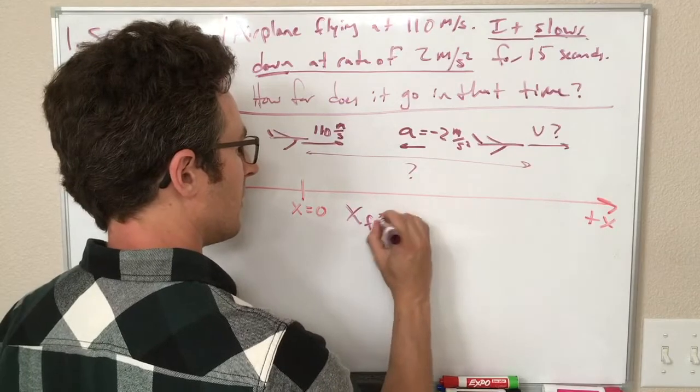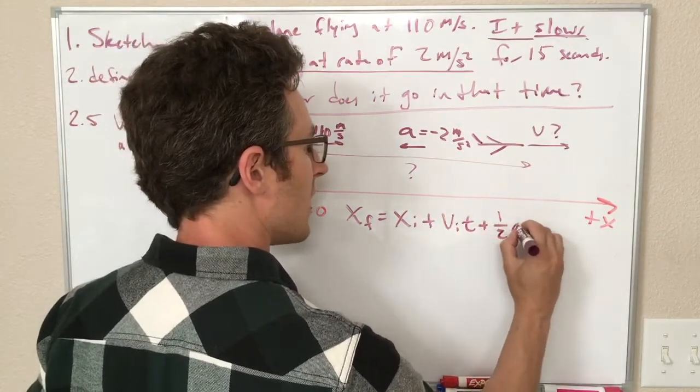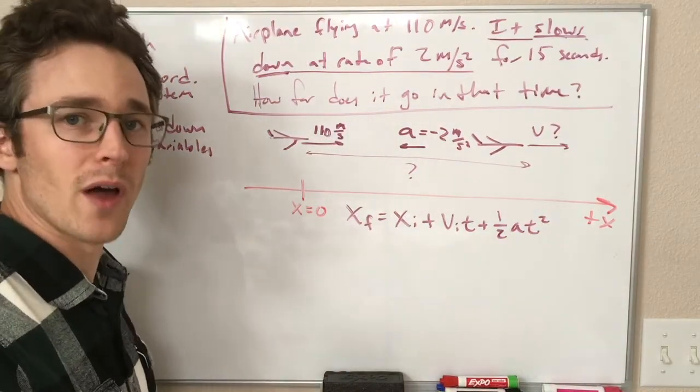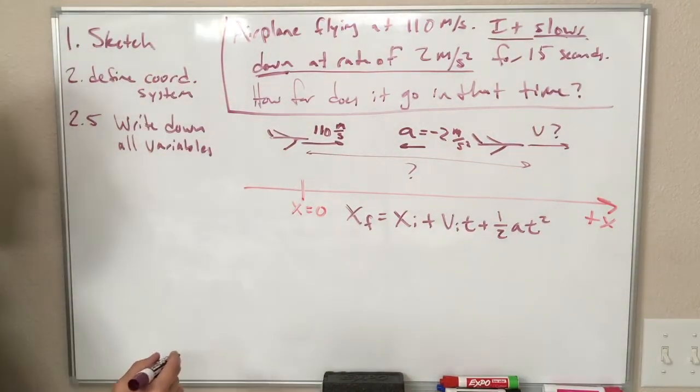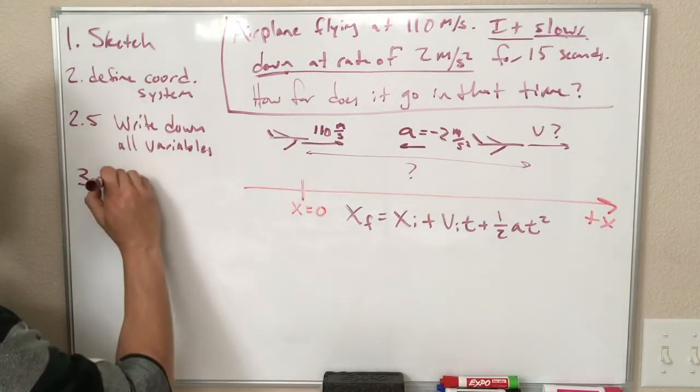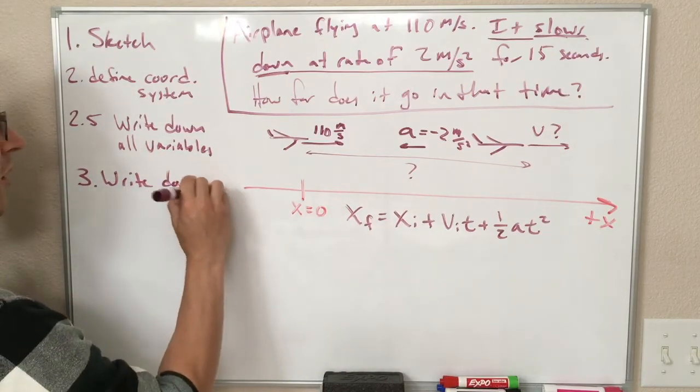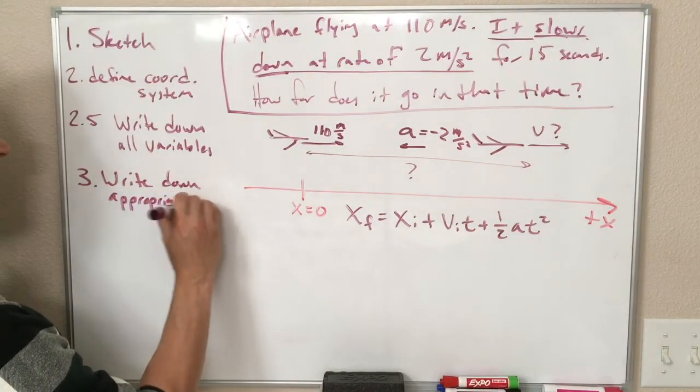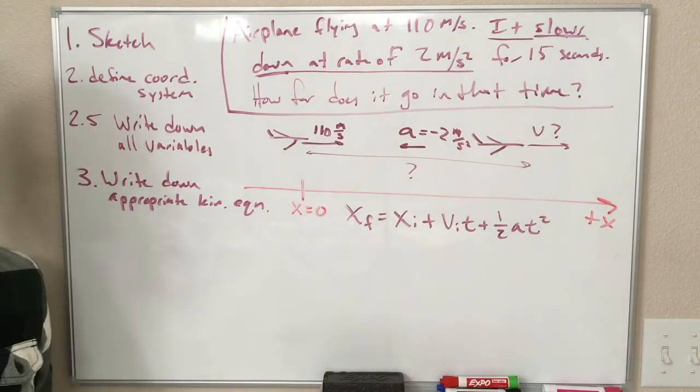And that equation is X final equals X initial plus V initial t plus 1 half A t squared. This is our position equation for an object that's accelerating. Step three is to write down the appropriate kinematics equation. And here I have done that.